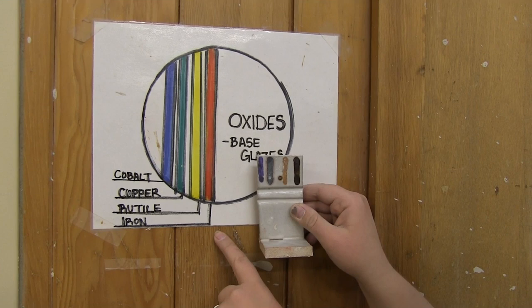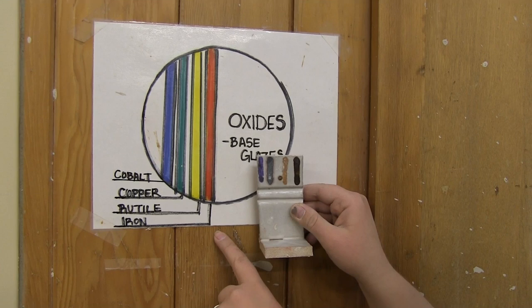The fourth stripe is iron oxide, and that's actually just rust concentrate. We put that on top, and that gives you a lot of browns, sometimes dark reds, but mainly browns and blacks.